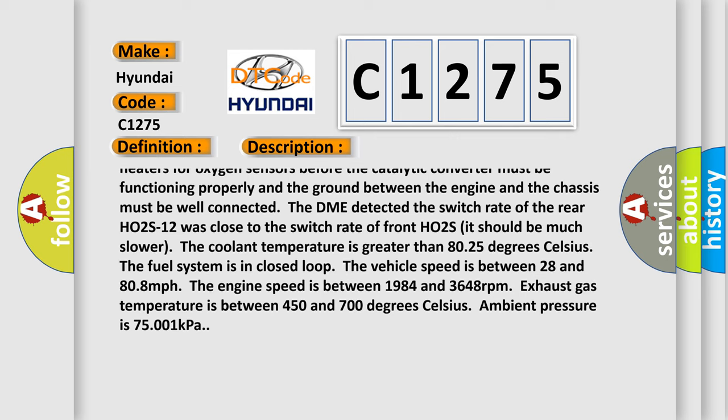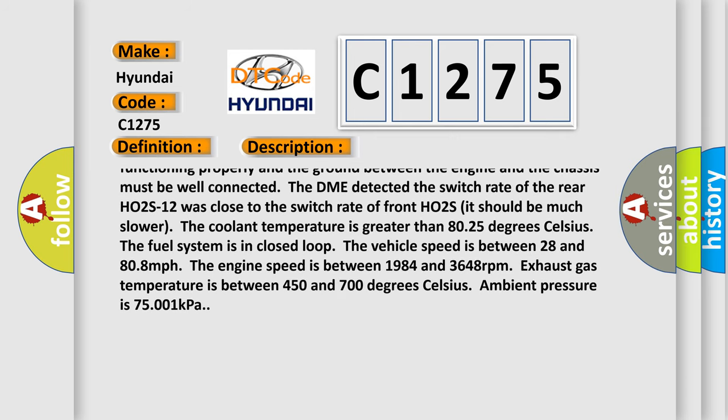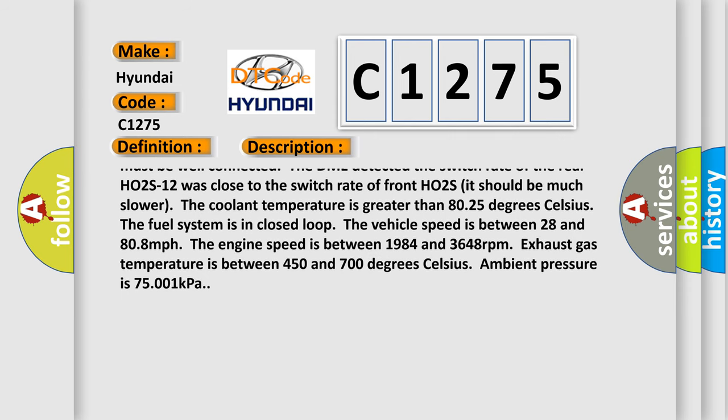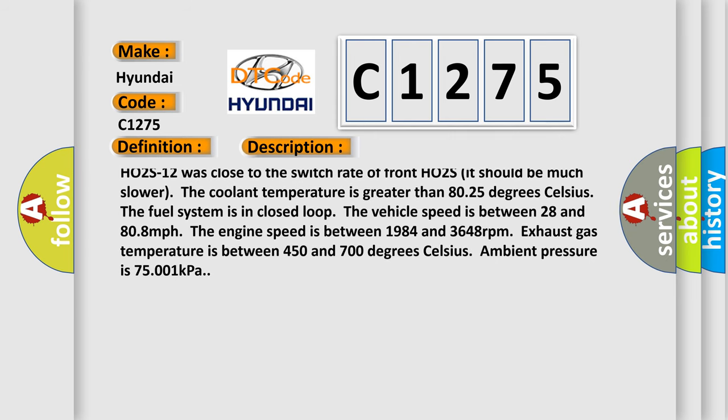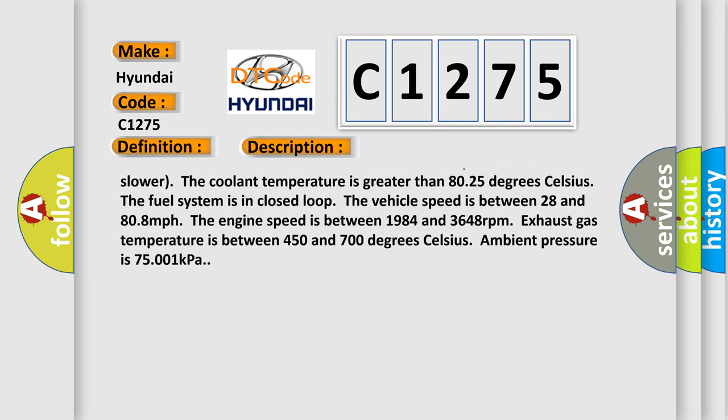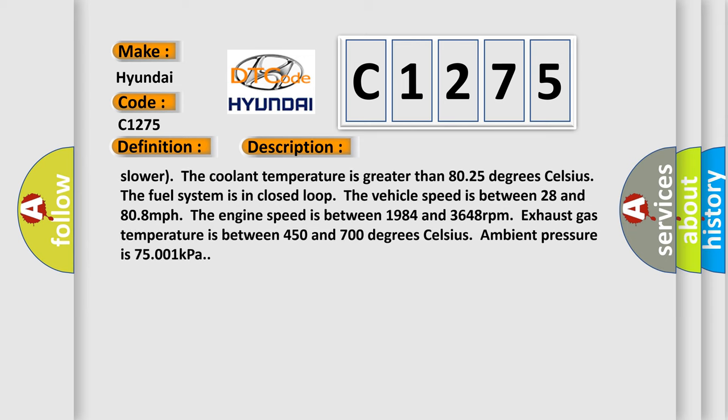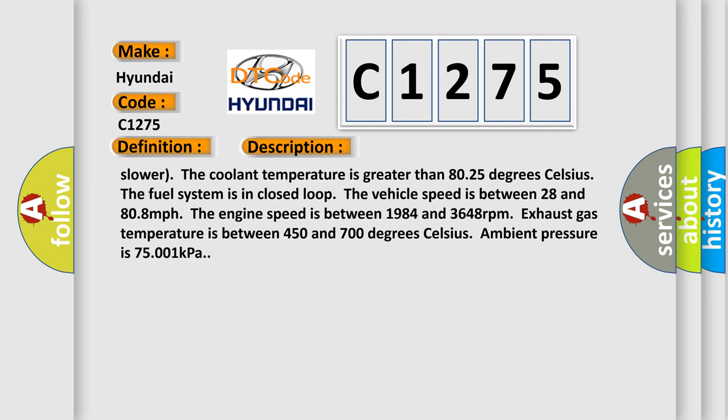The DME detected the switch rate of the rear HO2S12 was close to the switch rate of front HO2S. It should be much slower. The coolant temperature is greater than 80.25 degrees Celsius. The fuel system is in closed loop. The vehicle speed is between 28 and 80.8 mph. The engine speed is between 1984 and 3648 RPM. Exhaust gas temperature is between 450 and 700 degrees Celsius. Ambient pressure is 75.001 kPa.